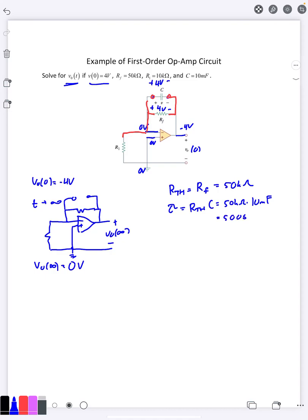And so now, as always, V₀(∞) is K1 is 0. V₀(0) is K1 plus K2. In this case it's negative 4, so K2 is negative 4 volts. So that gives me my V₀(t) is negative 4 e to the negative t over 500, and our answer is in volts.